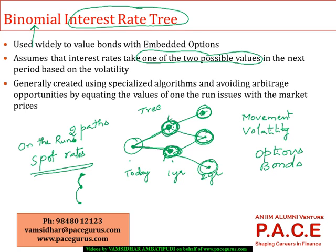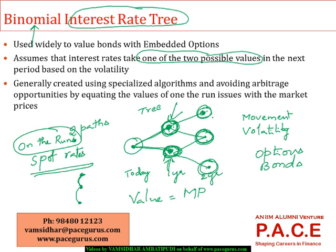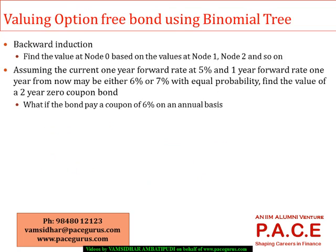We create two possible paths from each node using the forward rate and volatility, and calibrate them so that for all the on-the-run securities currently available in the market, their computed value equals the market price. Based on those algorithms we derive the interest rates at each node, and once we have those rates we can value bonds or options on those bonds using the generated interest rate tree.